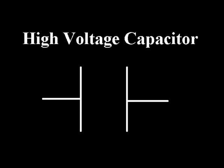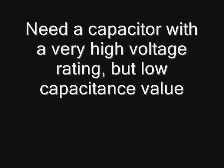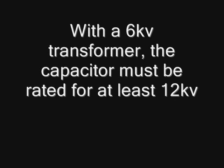The next major part of a Tesla coil is the high voltage capacitor. You'll need a capacitor with a very high voltage rating but low capacitance value. Remember that the voltage rating of the capacitor must be at least twice the voltage of the transformer. So for example, if you use a 6000 volt transformer, the capacitor has to be rated for at least 12,000 volts.